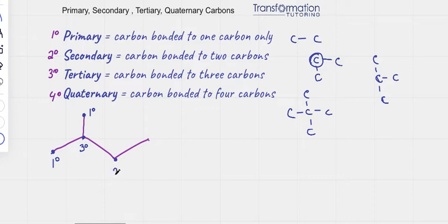The carbon next to it is attached to two carbons, so this carbon is secondary. And finally, this carbon all the way to the right is attached to one carbon only, so this carbon must be primary.